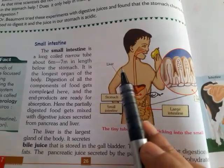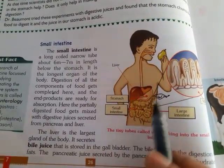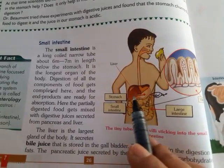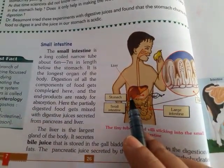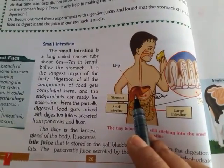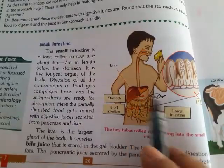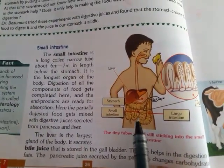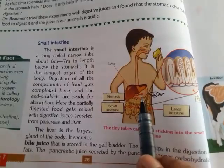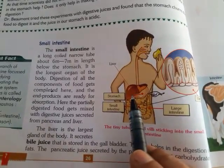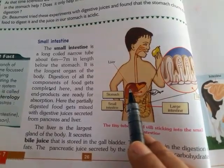The liver is the largest gland of the body. The liver secretes bile juice, and that bile juice is stored in the gallbladder. The bile stored in the gallbladder helps in the digestion of fats. So the function of bile juice released from the liver is the digestion of fats.